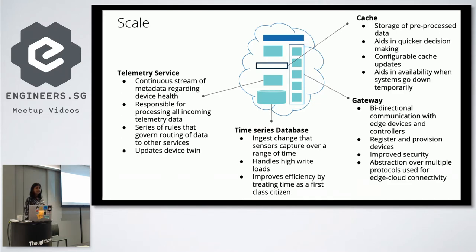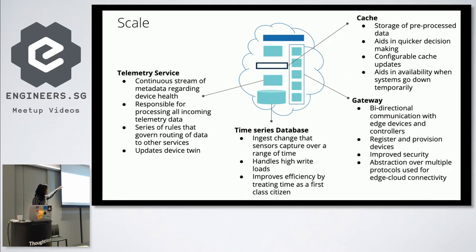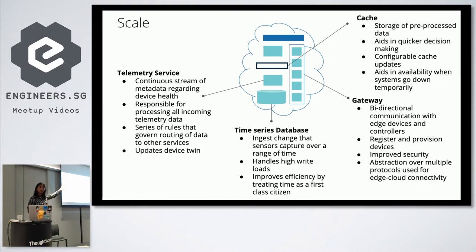We also had a time series database which captured the change in sensor state over time. One use case was a dashboard showing energy consumption over a period, or comparing to last month. This time series database uses time as a first-class citizen, so any data needed for the dashboard was pushed there. We also did caching — any pre-processing we could do was done and pushed into the cache. In some cases when the rest of our system went down, the cache was up and alive, so end users were not affected.